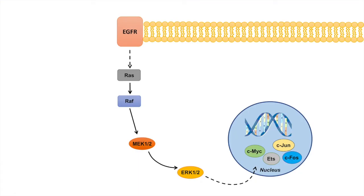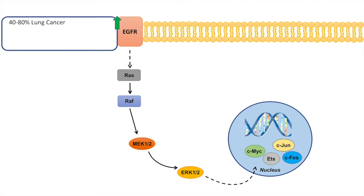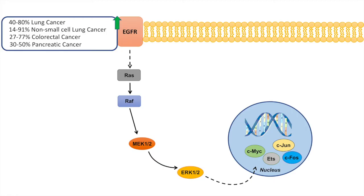Overexpression of EGFR can lead to overactivation of the RAF pathway. Cancers associated with EGFR overexpression include lung cancer, where about 40 to 80% of lung cancers have overexpressed EGFR, and about 14 to 91% of non-small cell lung cancers have EGFR overexpression. Additionally, 27 to 77% of colorectal cancers and 30 to 50% of pancreatic cancers are associated with overexpression of this receptor.